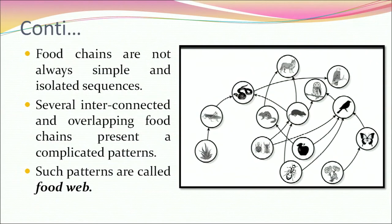Food chains are not always simple and isolated sequences. Several interconnected and overlapping food chains present a complicated pattern, and such patterns are called food webs.